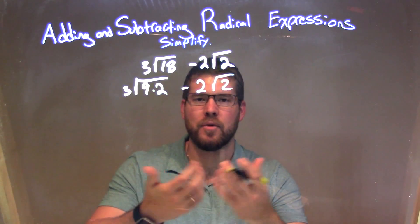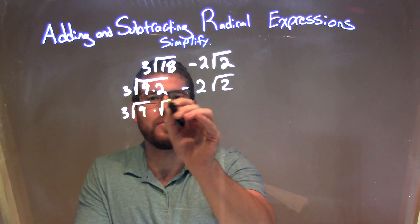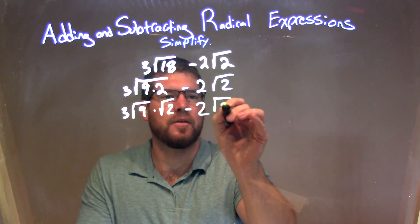Well, since it's multiplication right here, I can break that apart again to be 3 times the square root of 9 times the square root of 2 minus 2 square root of 2.